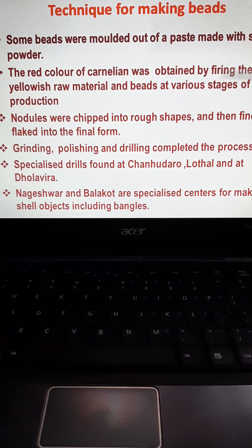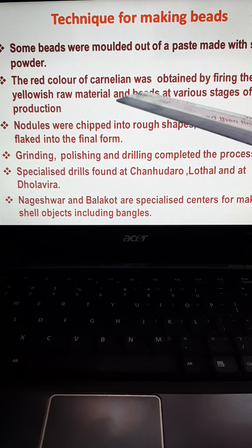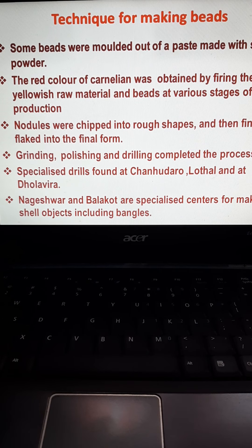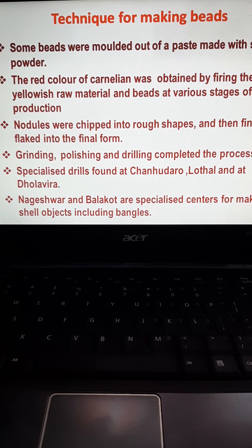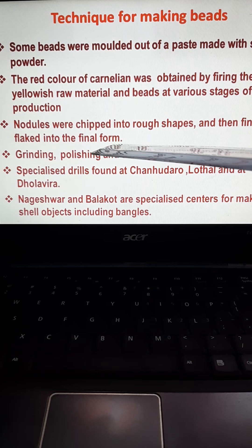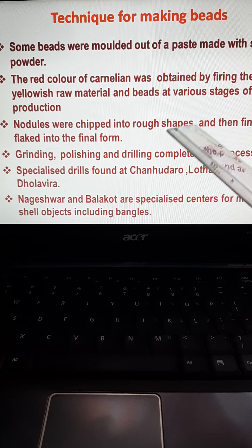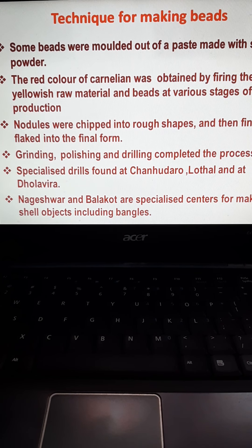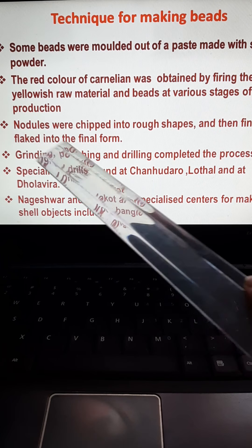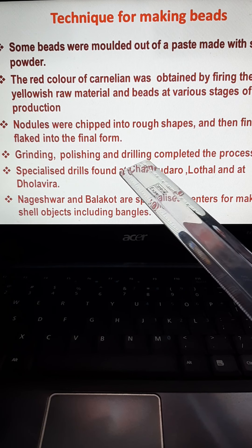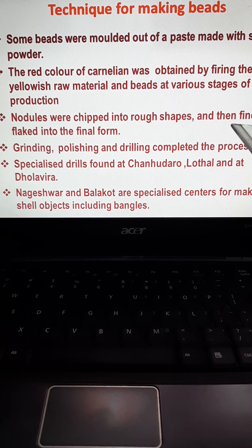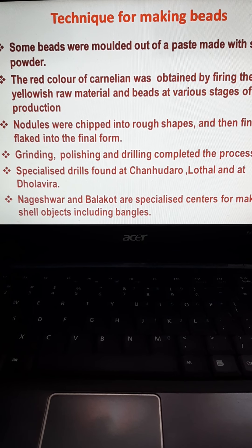Red carnelian stone was obtained by giving firing to yellowish raw material — they used to fire it and it turned into a reddish color. Beads of various stages of production were found. Nodules were chipped into rough shapes and then finally flaked into the final form. Some archaeologists have said that for very hard stone, grinding, polishing, and drilling were used to complete the process and give the bead its final shape.